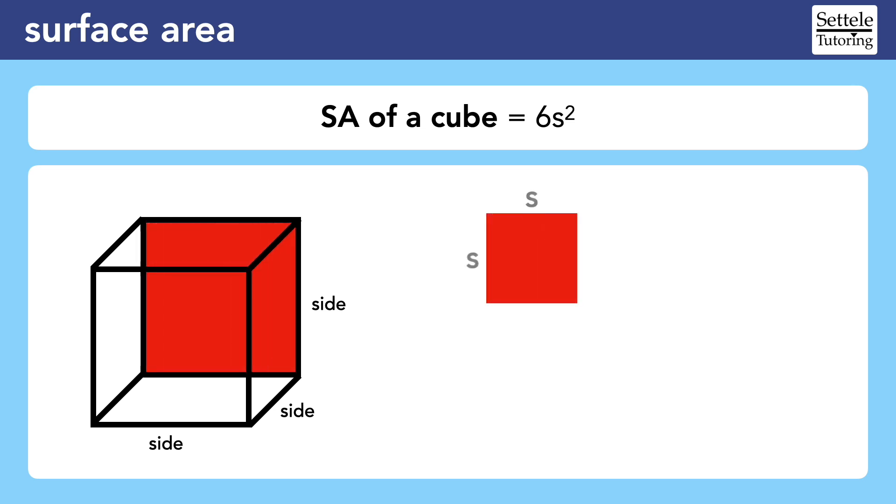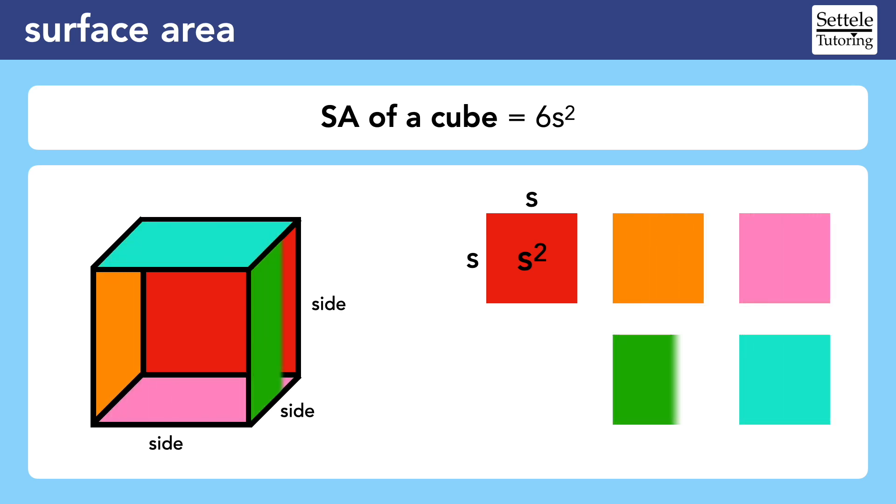The back of the cube is a square with side lengths of s. The area of the square is s squared. We can also see that the cube is composed of six of these squares. The back, the left side, the bottom, the top, the right side, and the front.